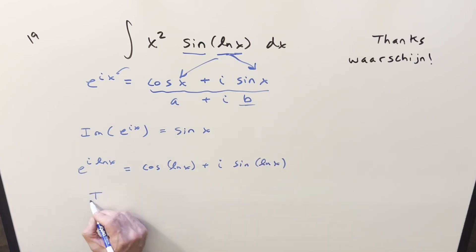Again, if we get the imaginary part on this, the imaginary part of e to the i ln x, the imaginary part's just going to be this, so it's going to be sine ln x. That's exactly the thing up there we want to use.